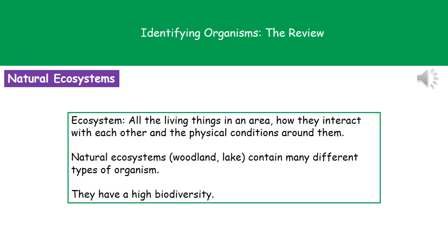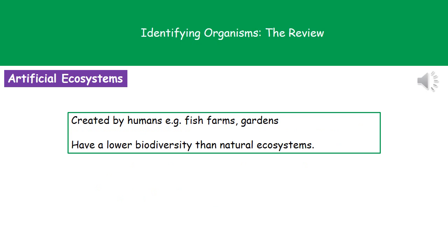Natural ecosystems have what's called a high biodiversity, meaning they have lots of different species present. We also have artificial ecosystems — these are ones that humans have created, such as fish farms and home gardens. Anything we have physically created is an artificial ecosystem, and these tend to have a lower biodiversity than natural ecosystems because we select only certain things to put in them.